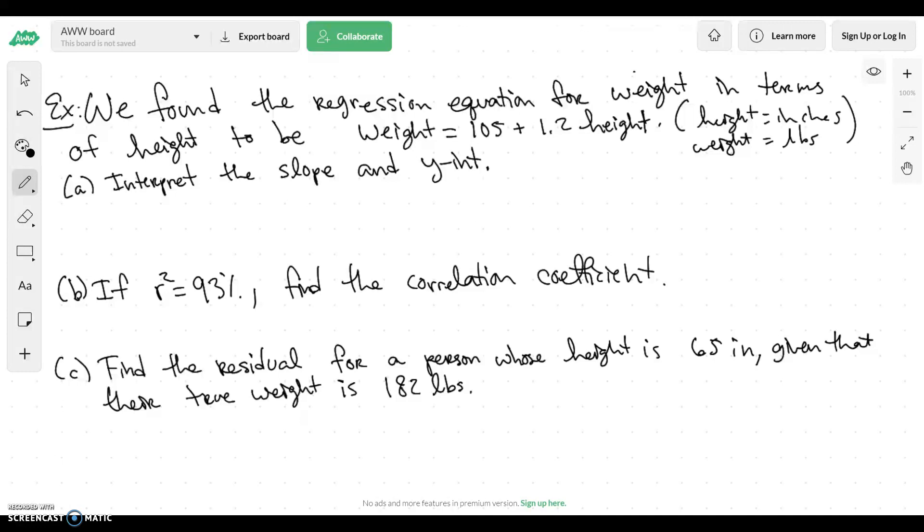So something to really note is that whenever we say in terms of this, the thing that comes after it is usually our x value. So that means our weight was our y value. So that's why if we look here at our regression equation, my height is my x and my weight is my y or my y hat.